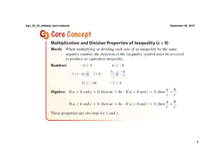This is the major difference between solving inequalities and solving equations. When multiplying or dividing each side of an inequality by the same negative number, the direction of the inequality symbol must be reversed to produce an equivalent inequality.